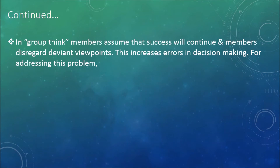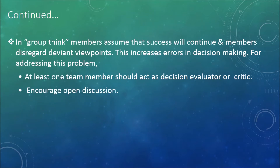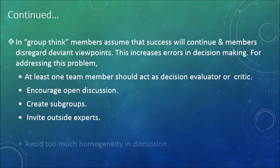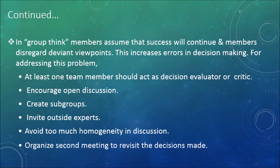In groupthink, members assume that success will continue and disregard deviant viewpoints, which increases errors in decision making. To address this problem: at least one team member should act as a decision evaluator or critic; encourage open discussion; create subgroups; invite outside experts; avoid too much homogeneity in discussion; and organize a second meeting to revisit decisions made.